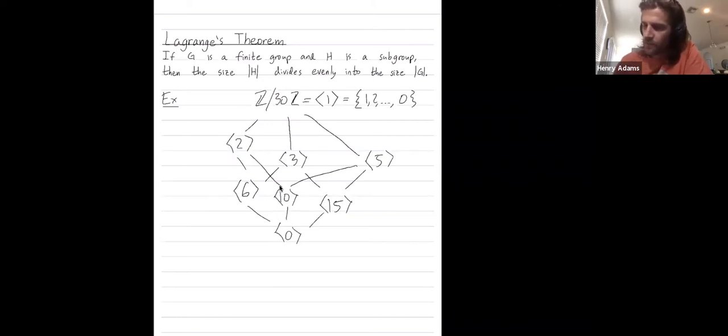The subgroup generated by 2 is all elements of the form 2, 4, 6, 8, all the way up to 28, and then finally get back to 30. The subgroup generated by 5 is all elements of the form 5, 10, 15, etc. Subgroup generated by 15 has just two elements, 15 and 0.